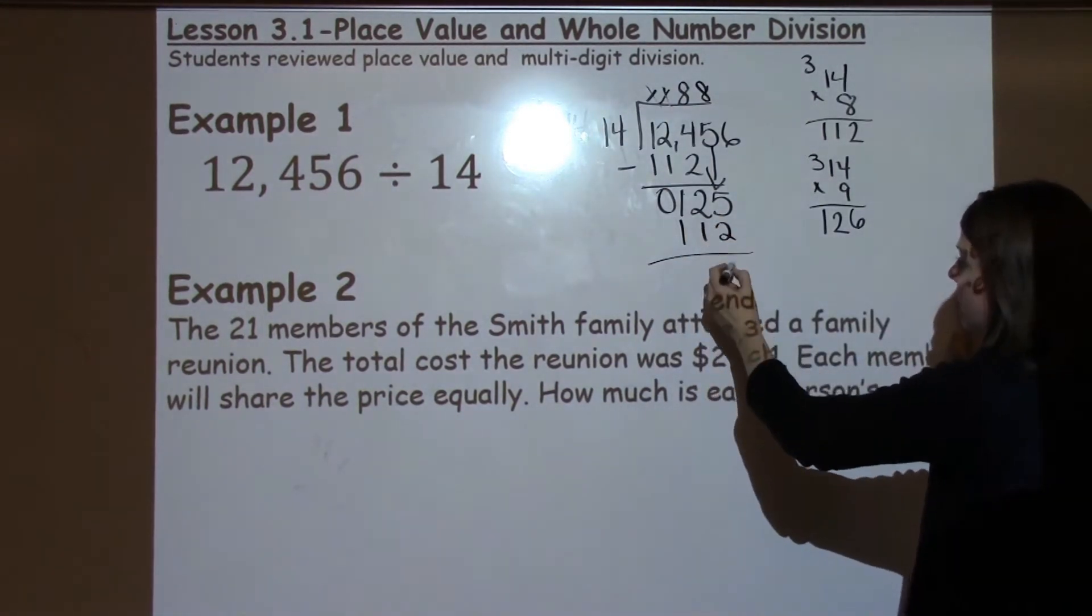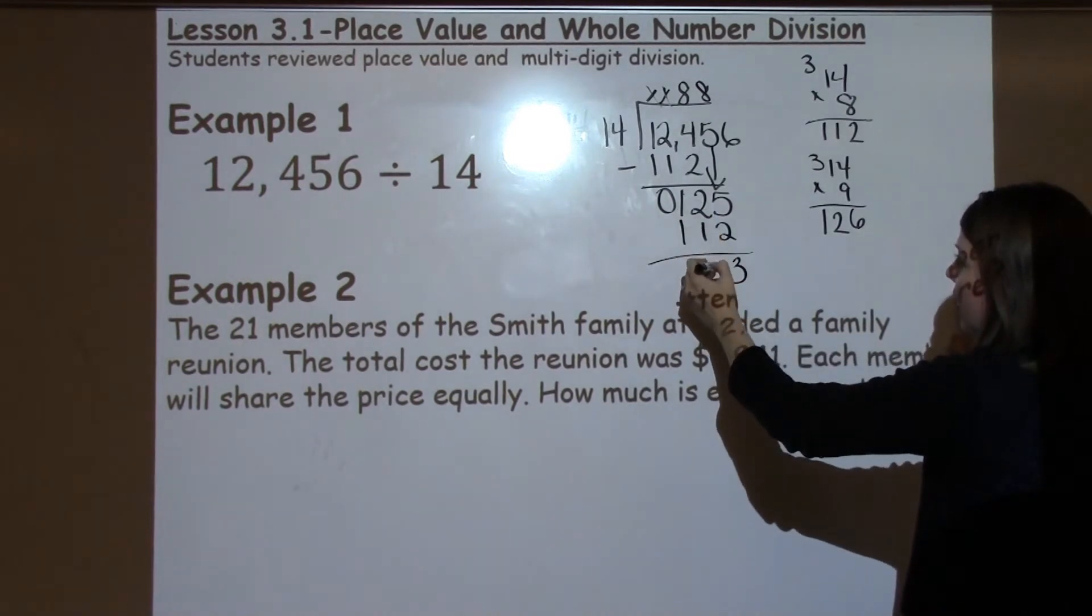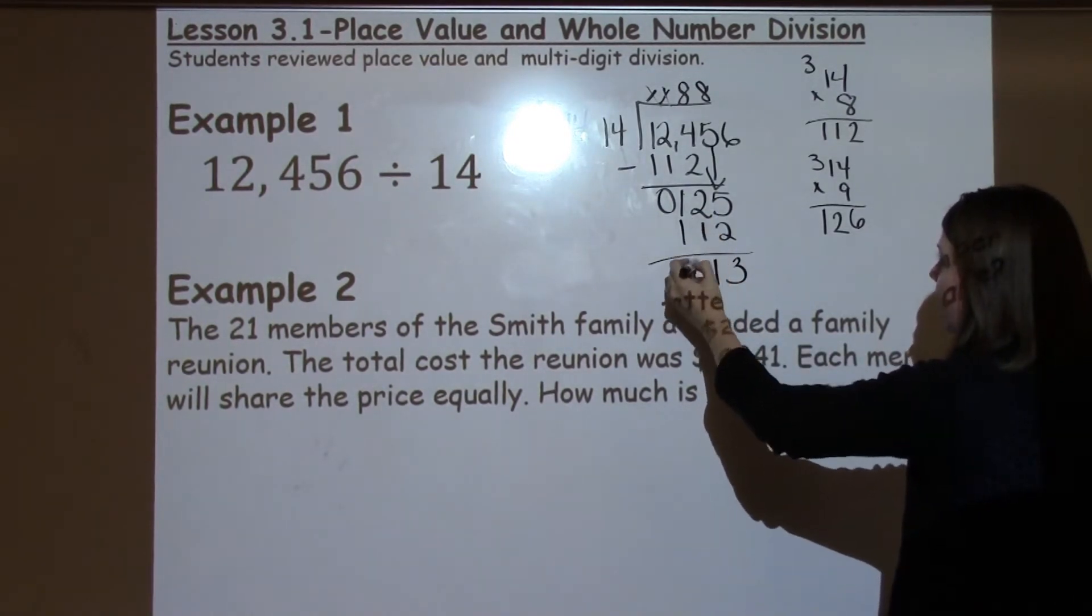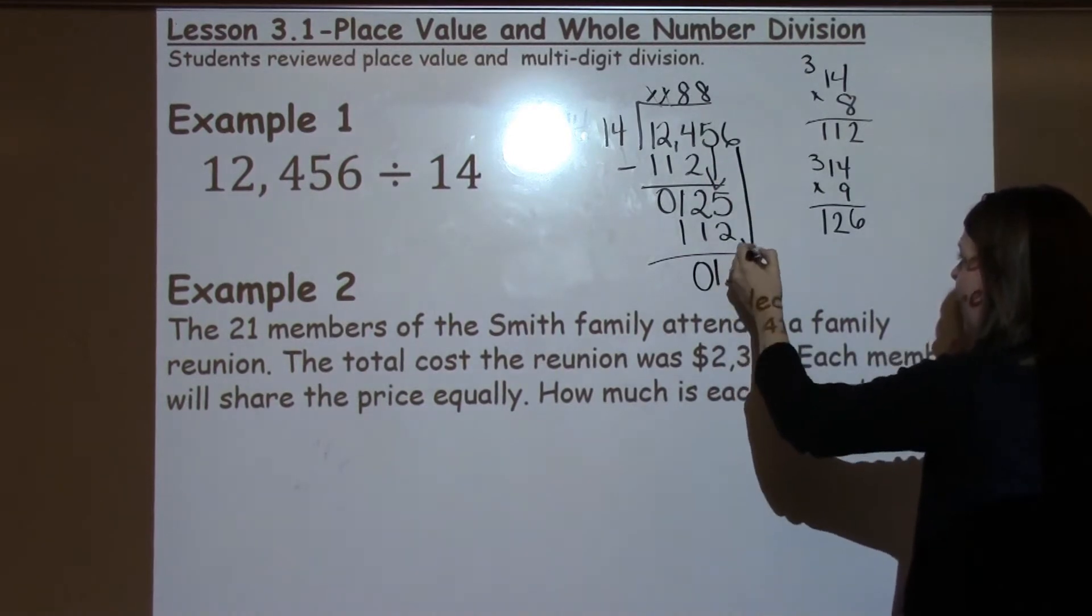14 times 8 is going to be 112 again. When I subtract, I have 5 minus 2, which is 3. 2 minus 1 is 1, and 1 minus 1 is 0. Go ahead and bring down my 6.